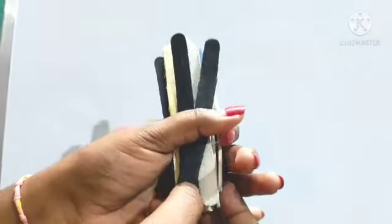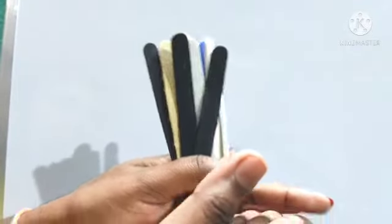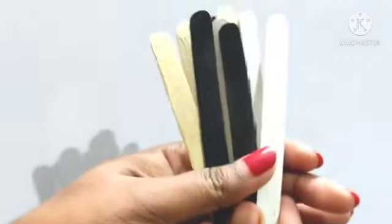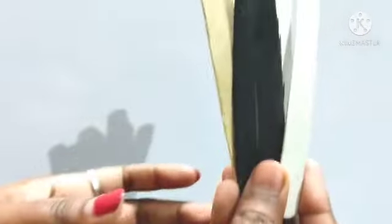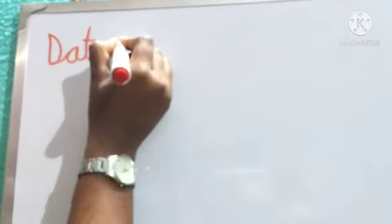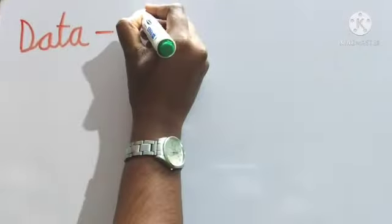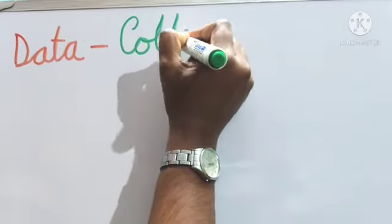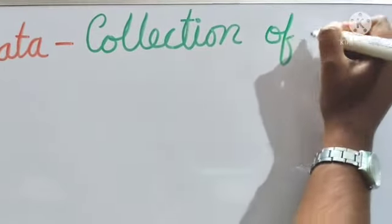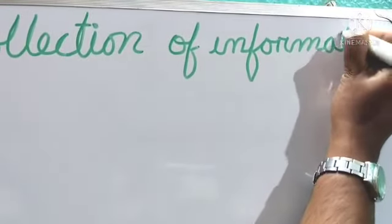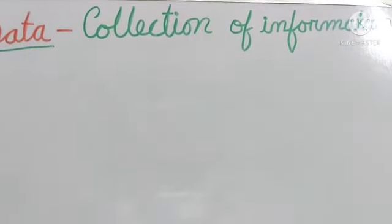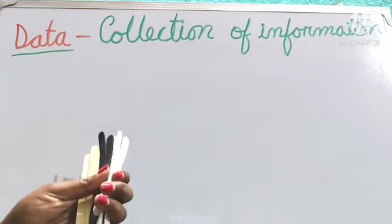Our topic is: what is data? Collection of information is called data. Let us first write — what is data? That is: collection of information. We are looking at these ice cream sticks and we have some information.